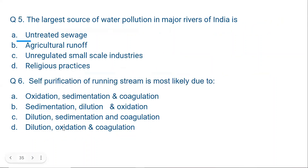Question 5: The largest source of water pollution in major rivers of India is: A. Untreated sewage, B. Agricultural runoff, C. Unregulated small-scale industries, or D. Religious practices. The correct answer is A — untreated sewage. Because even in cities where there is minimal small-scale industry or minimal agricultural activity, there is still river pollution due to untreated municipal sewage going directly into the river. A is the correct answer.